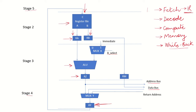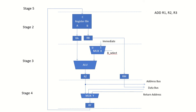Whatever operands are available in RY are passed back to the register file in stage 5, which is the write back stage. If any register needs to be updated or written into, it is done in stage 5.